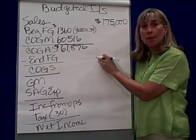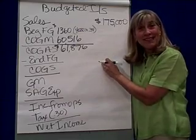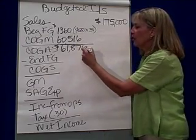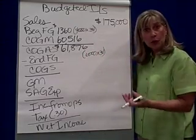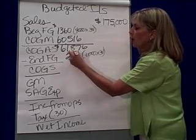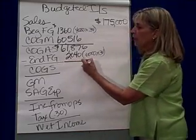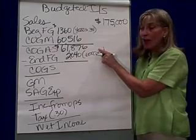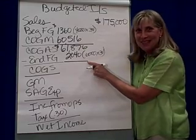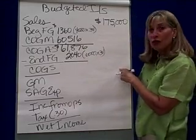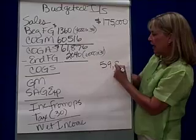Ending inventory — you'll recall from the production budget, that second budget we produced — ending finished goods was going to be 6,000 units. So 6,000 units times 34 cents, which is the cost to produce one bottle of water, means ending finished goods will probably have a value of $2,040. Thus, cost of goods available for sale of $61,876 minus ending finished goods of $2,040 gives me cost of goods sold of $59,836.